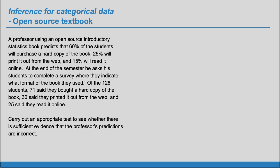In the textbook version of this problem, there's parts A through E. But essentially, what we want to do is carry out an appropriate test to see whether there is sufficient evidence that the professor's predictions are incorrect. So let's do that. First, we need to decide which test to do.